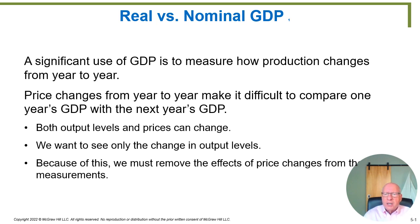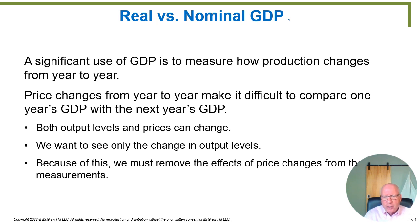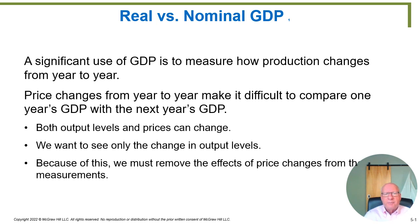Current production times current prices. But if the prices themselves are changing, then when you look at the total GDP number going up from four billion last year to five billion this year, is that an increase of production of oranges, bicycles, and concerts, or is that just simply all the prices went up? We can't answer that, so now we're going to have to define something.